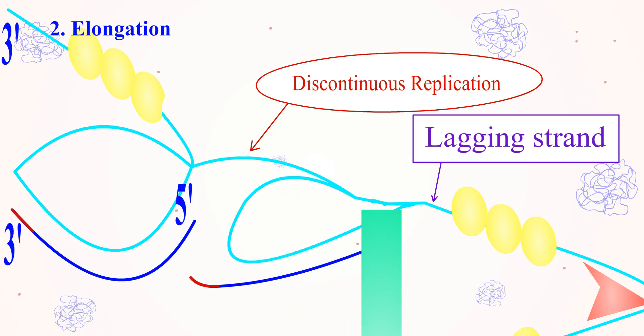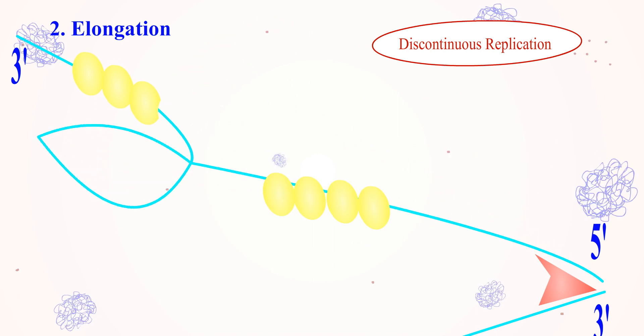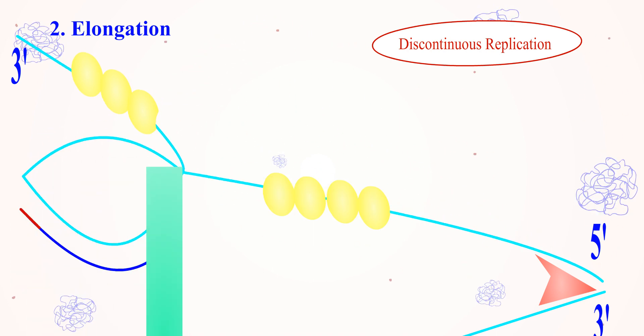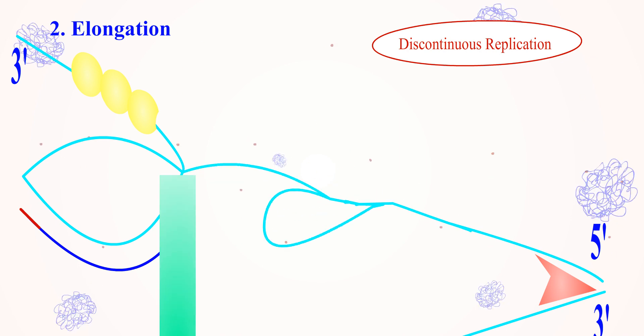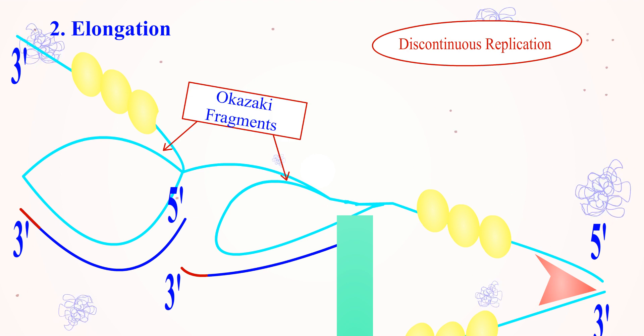In discontinuous replication, the DNA will turn from 5 prime to 3 prime to 3 prime to 5 prime manner. For the polymerase to act comfortably, the primers will bind to the DNA strand each time to produce short fragments of DNA segments called Okazaki fragments.